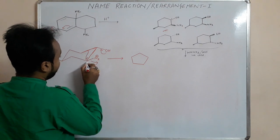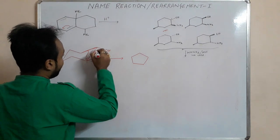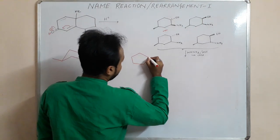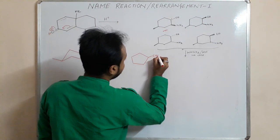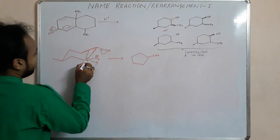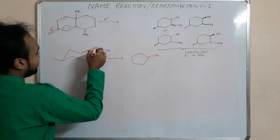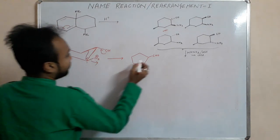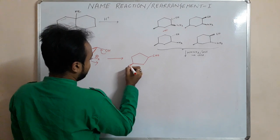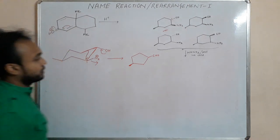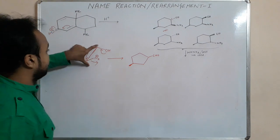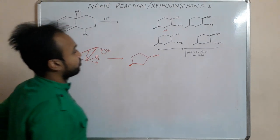If position 1 is the reference, we get a CHO group. The product is a 5-membered ring with an aldehyde. Whatever substituents are present on the ring are retained accordingly. The key principle is identifying and migrating the anti-periplanar bond relative to the departing N2+ group.